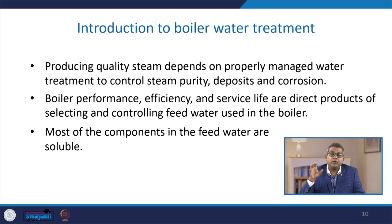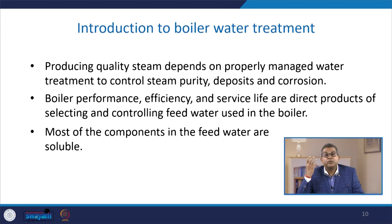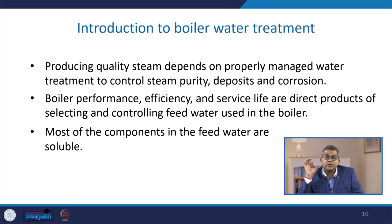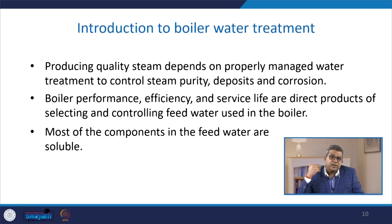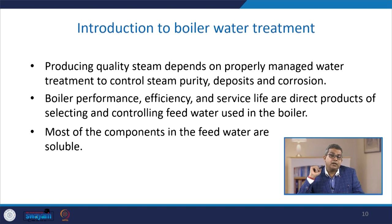When we talk about scaling parameters, flow fluctuation, and corrosion attributed to scales and tube damage, the boiler performance, efficiency, and service life are direct products of selecting and controlling the feed water used. Sometimes ions, dissolved gases, etc. may produce scales and foams, which have no heat value, so efficiency and performance may go down and you may not get the desired steam.